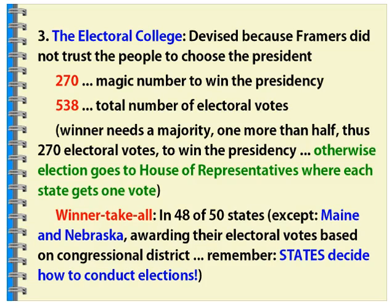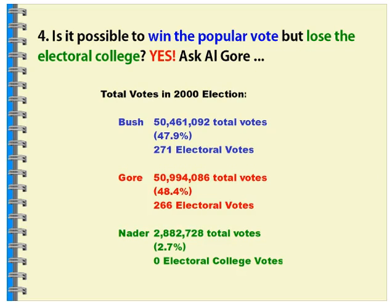You win the most votes of the state, you win all of the electoral votes for the state. This ties back to the idea that states conduct elections, not the national government, so each state determines how its electoral votes are allocated. Maine and Nebraska allocate theirs according to congressional districts, and then the Senate electoral votes according to the popular vote overall in those states.